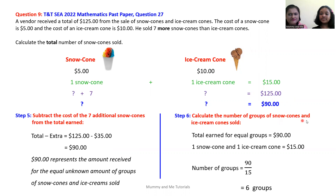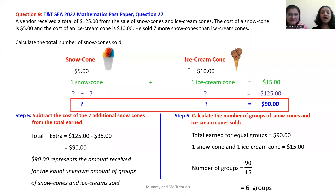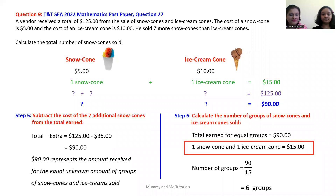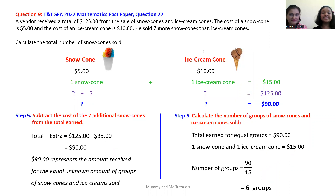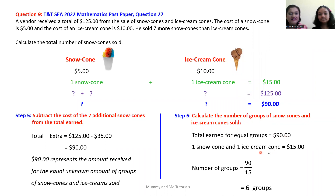Step six: calculate the number of groups of snow cones and ice cream cones sold. We know the total amount of money earned for an equal amount of groups is $90, and one snow cone and one ice cream cone cost $15 altogether. Hence, the number of groups equals the total earned, $90, divided by the cost of one group, $15, giving you six groups.